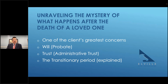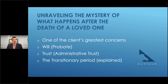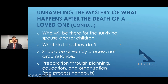How does a revocable trust — which is a substitute for a will — get administered? To the average person this is one of the great mysteries. The transitionary period from the time someone dies with a trust to the time of distribution — that administrative period — is what we're going to unravel. Among the concerns: if you're married or have children, who will be there for the surviving spouse and children? This is a very fundamental concern.